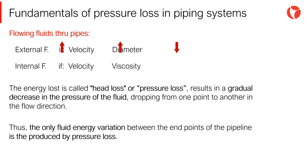External resistance will be greater the higher the fluid velocity and pipe wall roughness, and the smaller the pipe diameter. On the other hand, internal resistance will be greater the higher the fluid velocity and fluid viscosity. The energy used to overcome these resistances is called head loss or pressure loss, resulting in a gradual decrease in the pressure of the fluid, falling from one point to another in the direction of the fluid flow.